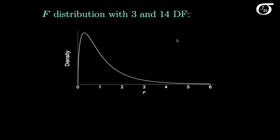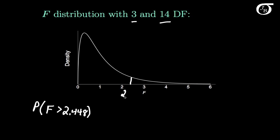Here is an F distribution with 3 degrees of freedom in the numerator and 14 degrees of freedom in the denominator. Suppose we are interested in finding the probability that a random variable F with this distribution takes on a value greater than 2.448. That is simply the area to the right of 2.448 under this F distribution with 3 and 14 degrees of freedom. We can find that value exactly using computer software, but if we had to use a table, this is how we go about it.